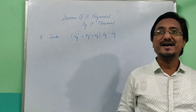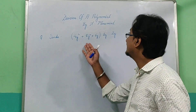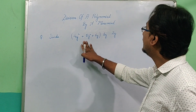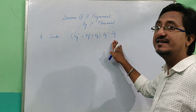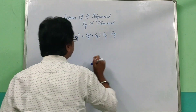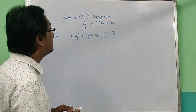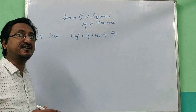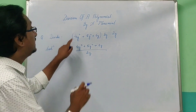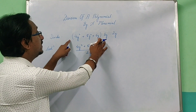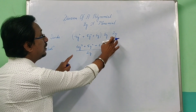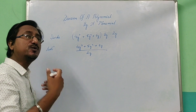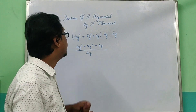So first we will divide a polynomial by a monomial. Here I have taken one example — I have taken a polynomial and a monomial. Now we divide. When we divide from the monomial, there are two ways to divide. The first one is that we use the polynomial as the numerator and the monomial as the denominator.